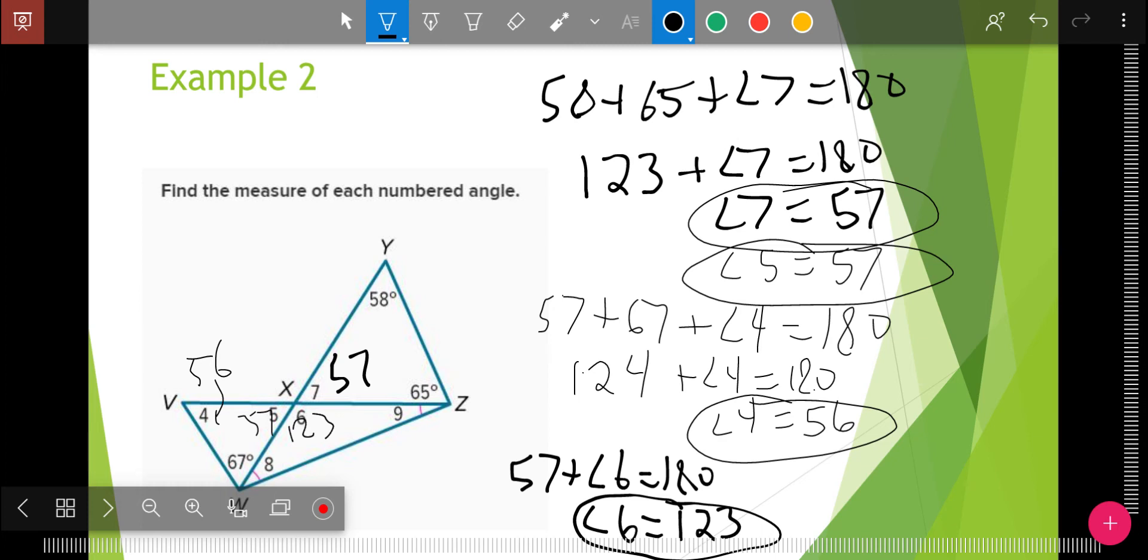Now, eight and nine. Eight and nine are tricky because there's not a lot of information. But it does have these little marks. What do those little marks mean? It means that they're congruent. And so I'm going to take 180 minus 123 because angle six is in the triangle. I'm going to get 57. So there's 57 degrees left. I want to divide it by two. And so angle eight equals 28.5 and angle nine equals 28.5.